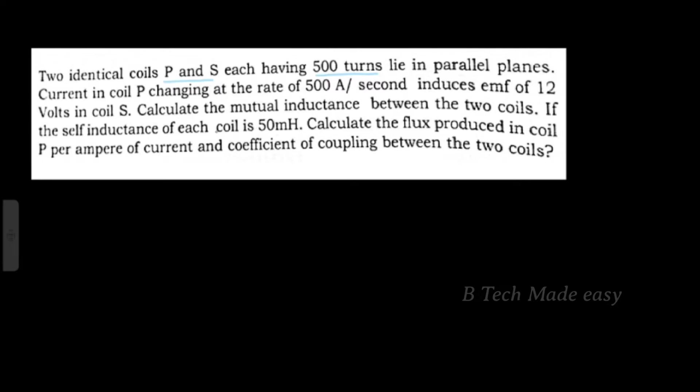The P-coil has a current changing at 500 Ampere per second. That change induces an EMF of 12 Volt in coil S. This is called mutually induced EMF. Calculate the mutual inductance between the two coils.